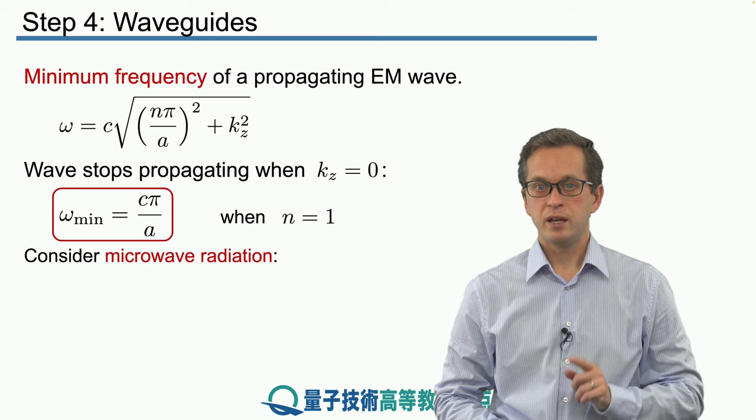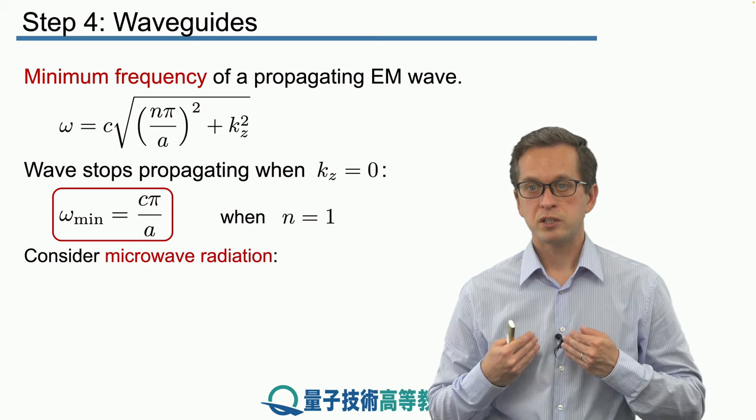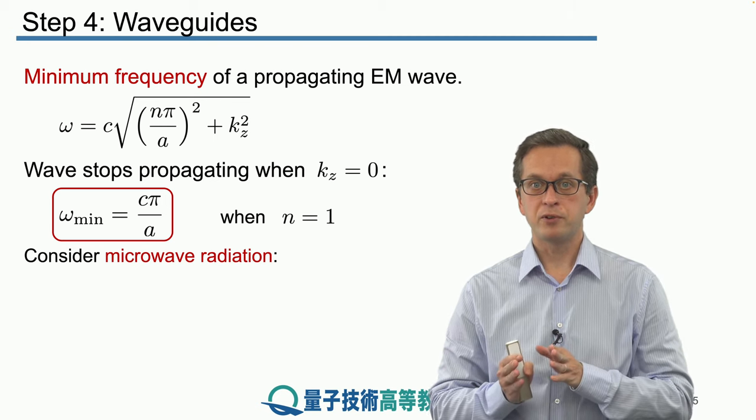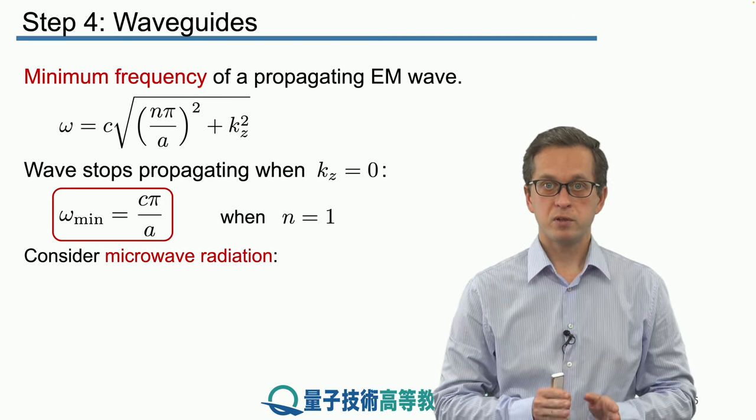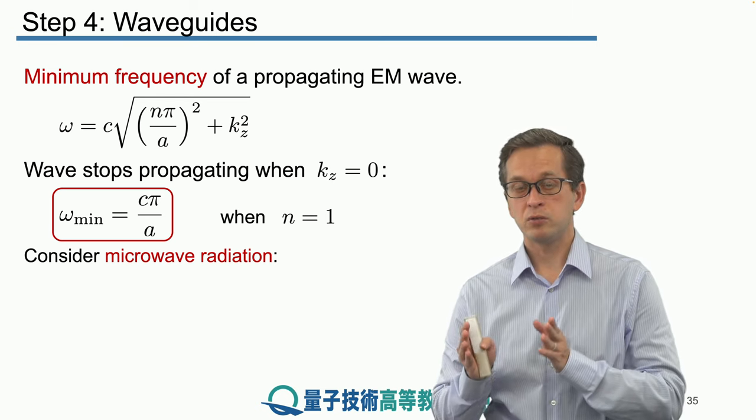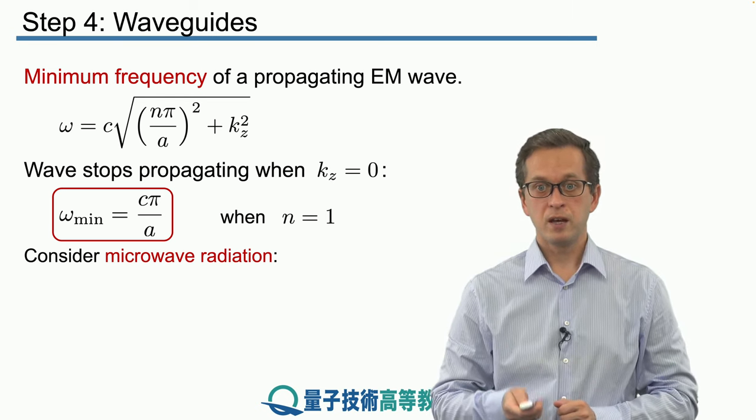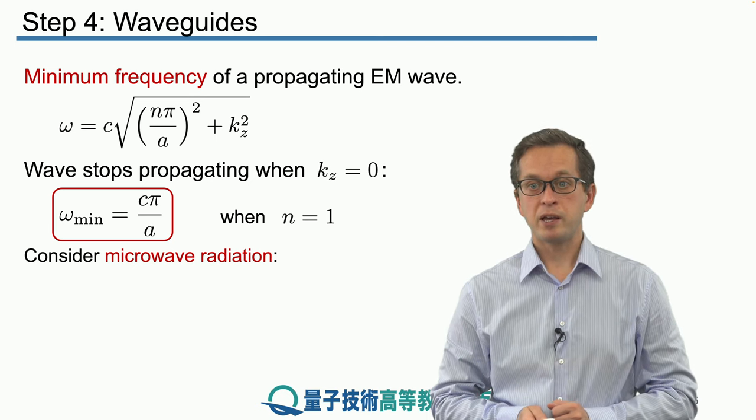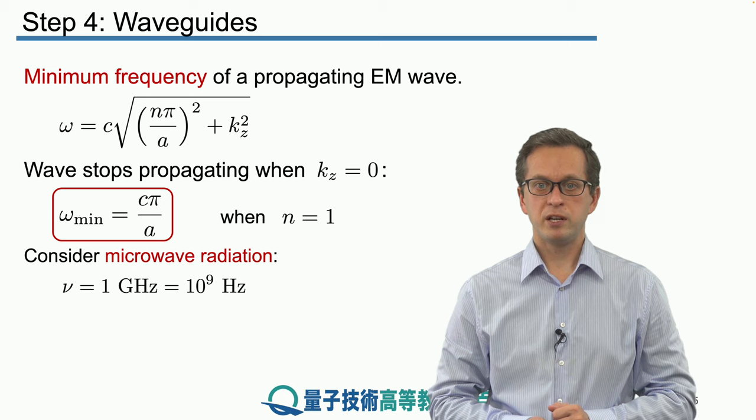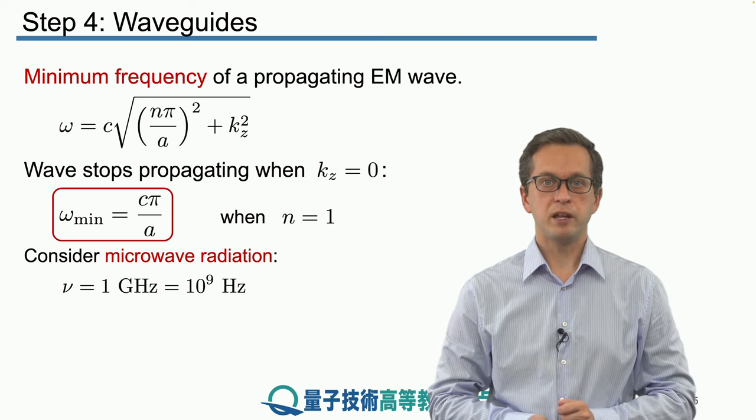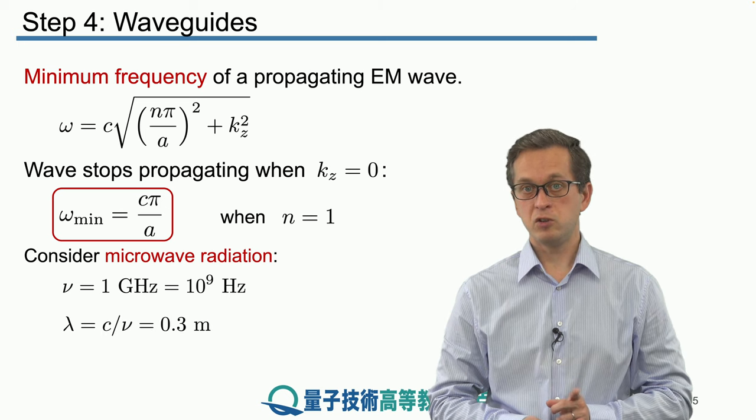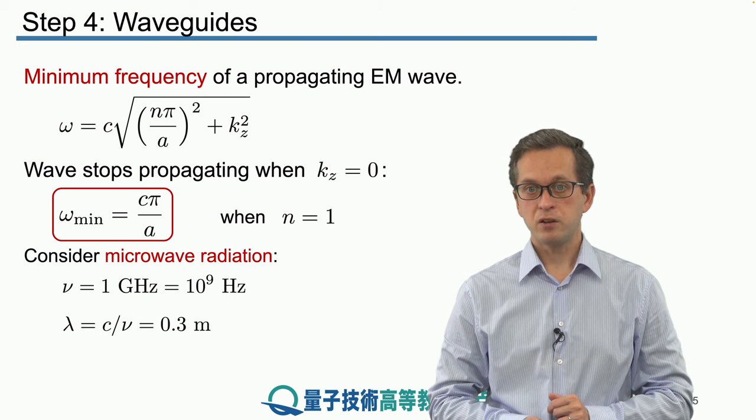This is very, very important. It tells us that we cannot just feed in an arbitrary electromagnetic wave into an arbitrary waveguide. The frequency of the wave that can propagate through a waveguide is closely related to the dimension of the waveguide. For example, let's consider a microwave radiation. The frequency of such radiation is around 1 GHz, so 10 to the 9 Hz. Meaning that the wavelength of such radiation is 0.3 meters.